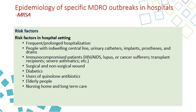For the risk factors for MRSA, we have risk factors in the hospital and in the community. In the hospital, risk factors — which are repeated across several MDROs including MRSA, VRE, and CRE — include frequent and prolonged hospitalization, indwelling central line, urinary catheter, implant prosthesis, drain, immunocompromised patients, surgical patients, diabetic patients, use of certain antimicrobials like quinolone antibiotics, elderly patients, and nursing home or long-term care residents.